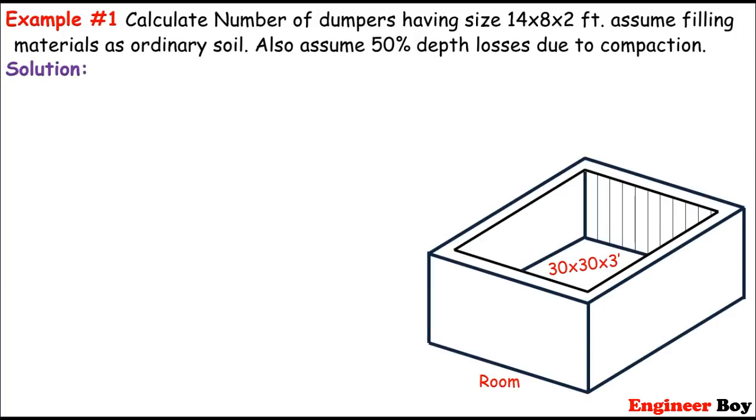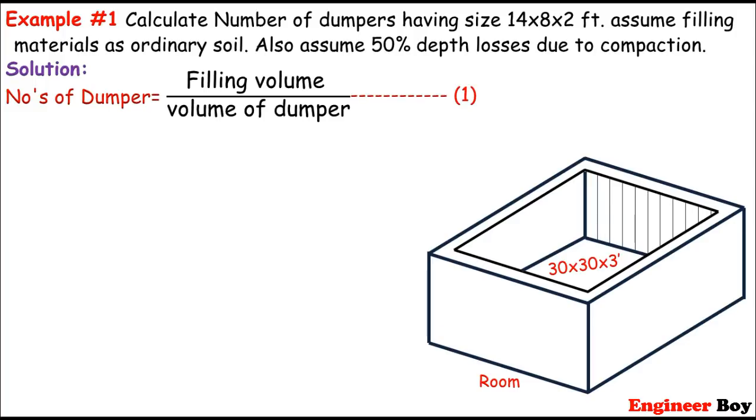So I'll come directly into solution over here. In the solution, if you see, we are asked to determine the number of dumpers. The number may be the ratio of same quantities. So the number of dumpers must be the filling volume divided by the volume of dumper. Let's call this formula as equation 1.